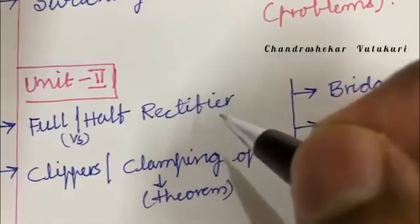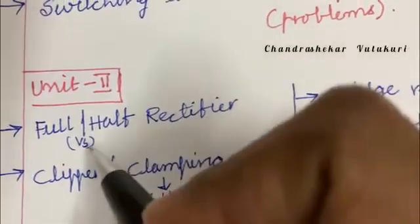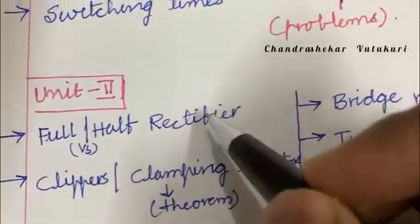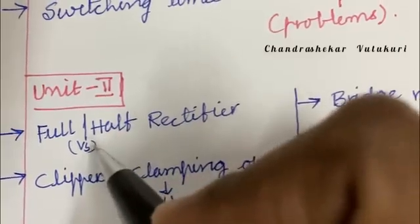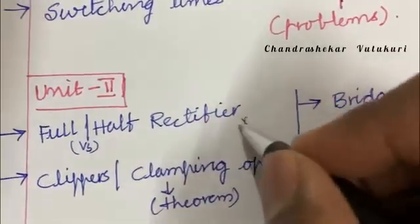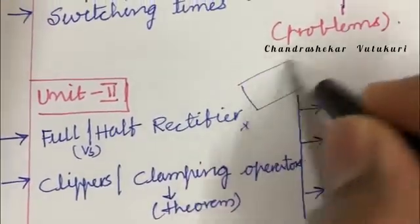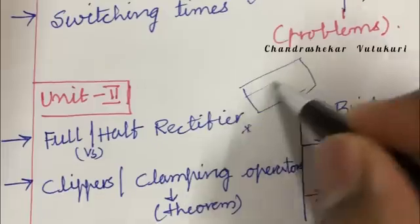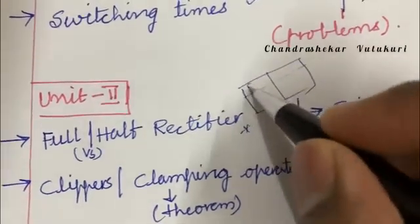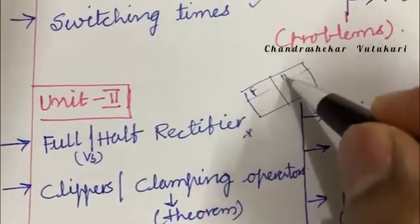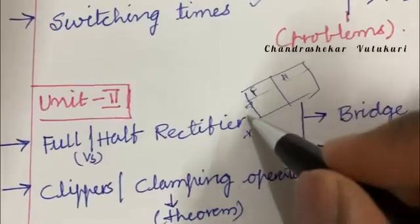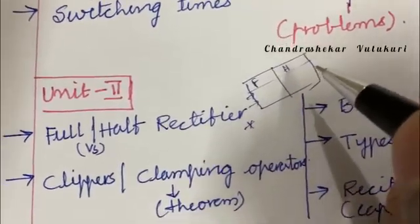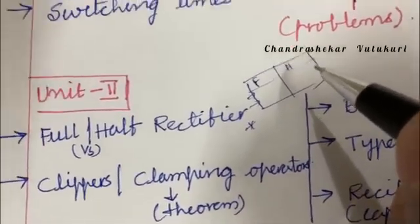The second unit is all about the rectifiers. Here we will be getting about full or half wave rectifier, or you are supposed to work out full wave versus half wave rectifier. If it is a difference among the two parameters, you need to work out the tabular column using a pencil. Write the full wave rectifier to the left and half wave rectifier to the right, and write only in bullet points all the time.